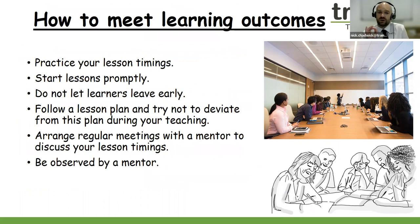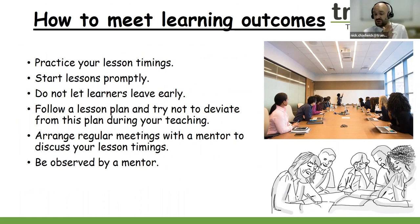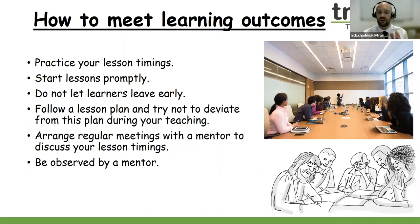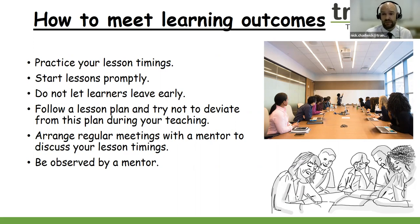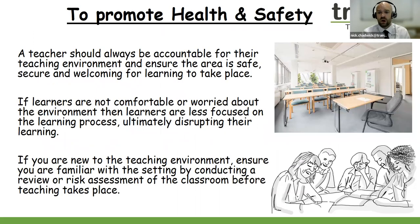To meet learning outcomes: practise your lesson timings, start lessons promptly, and do not let learners leave early — try to keep to your lesson timings. Follow a lesson plan and do not deviate too much from it, especially if you're teaching a course for the first time. Stick to those lesson timings and don't deviate with too many off-task activities. Arrange regular meetings with a mentor or manager to discuss your course progress, and try to be observed by a mentor who can give feedback on your timings.